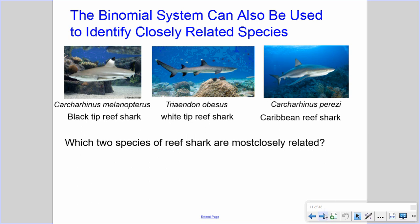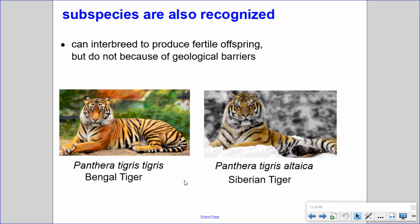In the naming system, subspecies are also recognized. Subspecies are species that can still interbreed to produce fertile offspring but do not because of geographical barriers. For example, the Bengal tiger is Panthera tigris tigris and the Siberian tiger is Panthera tigris altaica — both are subspecies of tiger. These two tigers can still interbreed and produce fertile offspring, but because of geographical barriers, they do not interact.